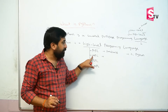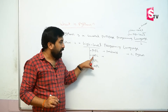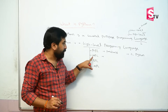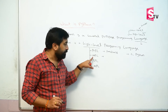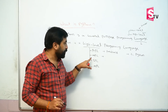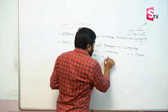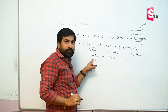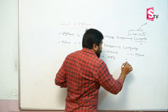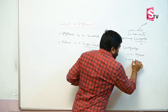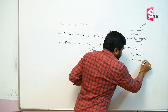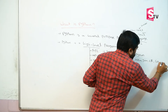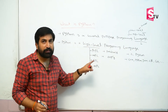Object-oriented programming languages are high-level programming languages that support OOP concepts. Any high-level programming language which supports OOP concept, that language we are calling as an object-oriented programming language. Best examples are C++, Python, Java, C#, and Go. These are all object-oriented programming languages.